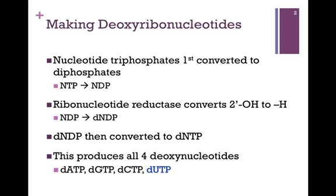The nucleotide diphosphates are then readily converted through phosphorylation to deoxynucleotide triphosphates. Through this process of ribonucleotide reductase, we thereby produce all four deoxynucleotides: deoxy ATP, deoxy GTP, deoxy CTP, and deoxy UTP.